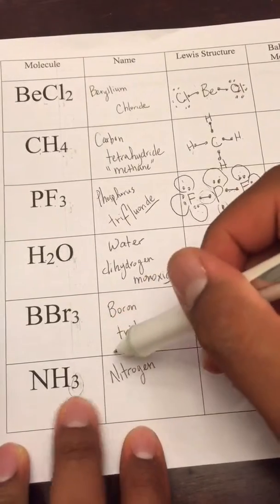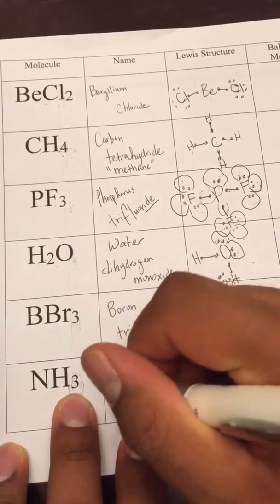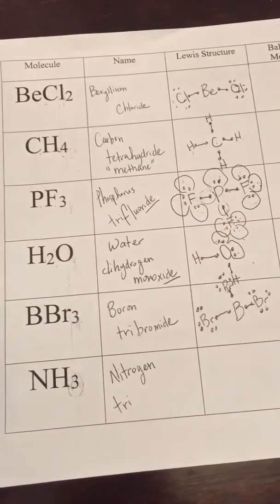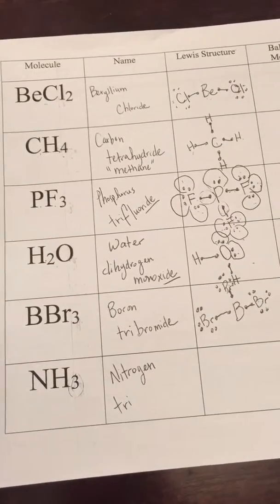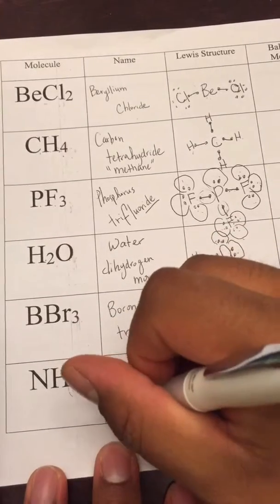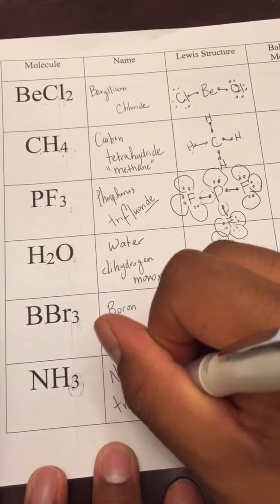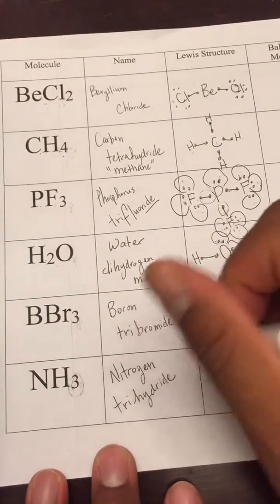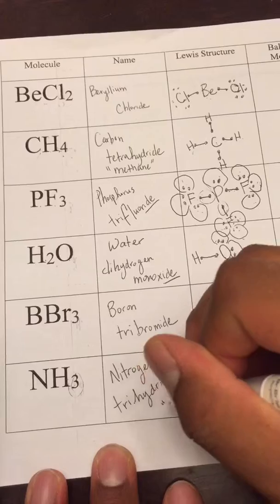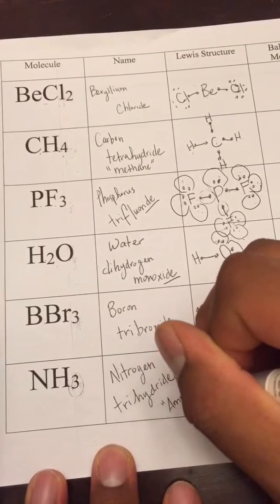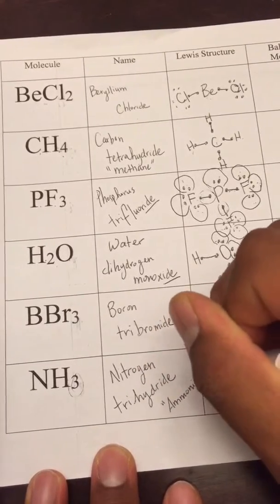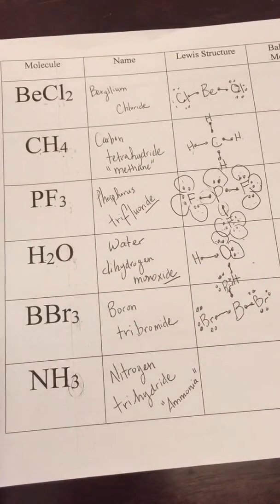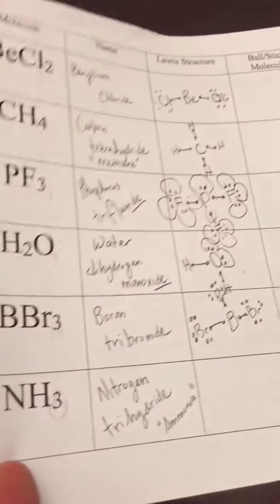Now we got an N with subscript three, so we have to find the prefix for three, which is tri. Then we have H, which is hydrogen - we're gonna change the ending to hydride. So the name will be nitrogen trihydride. It is commonly known as ammonia, a very toxic gas.